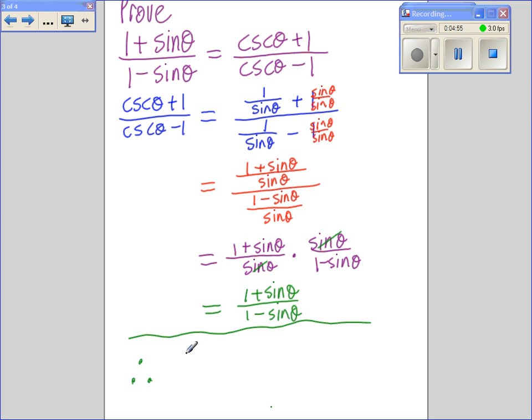You can see that is my original left side so I have indeed proved it. So therefore one plus sine of theta over one minus sine of theta equals cosecant of theta plus one over cosecant of theta minus one.